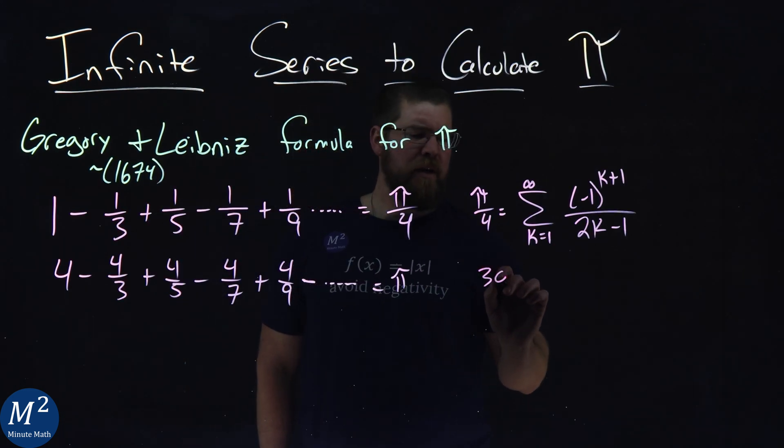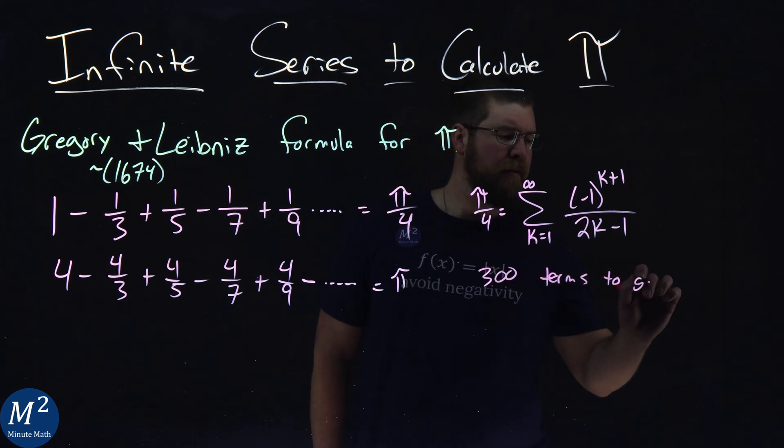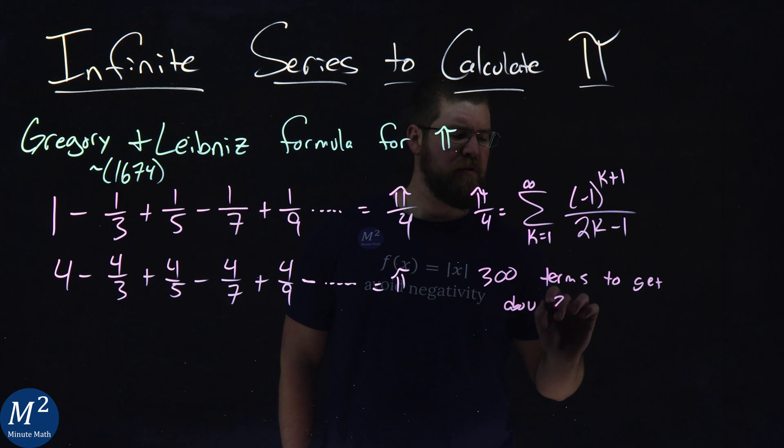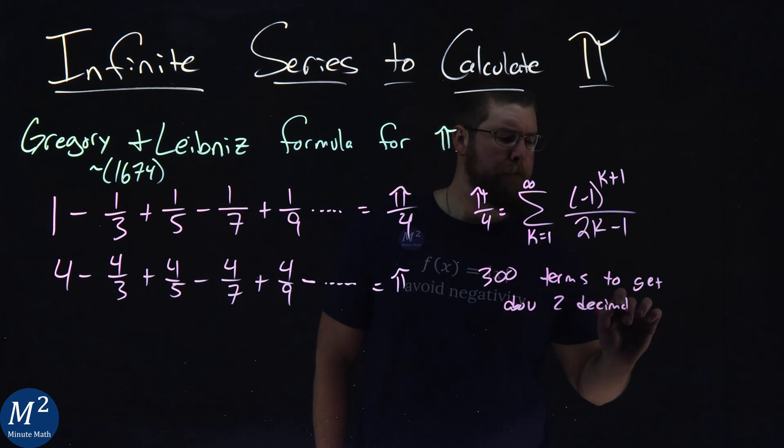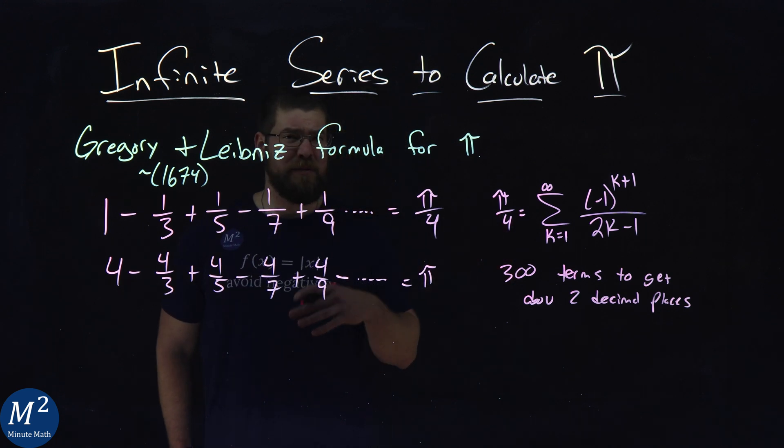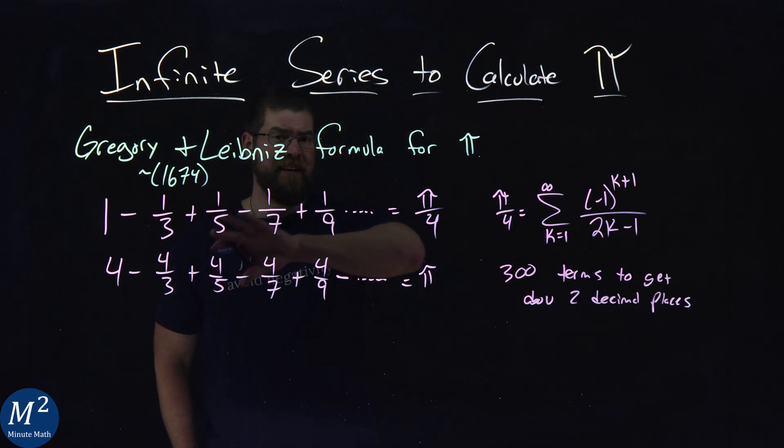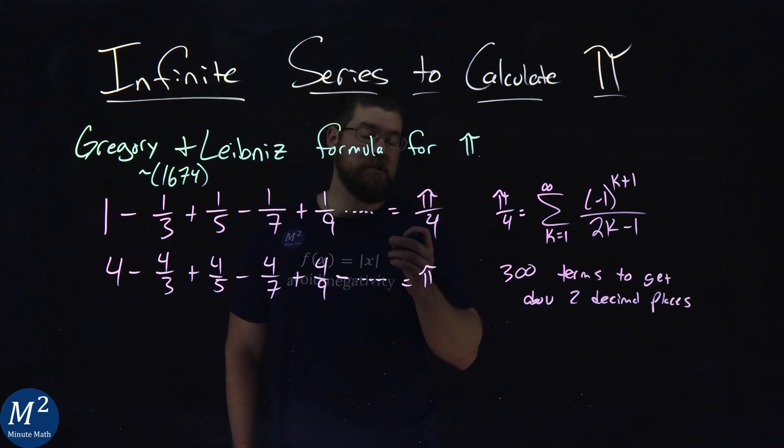And that's because we need about 300 terms here to get about two decimal places of accuracy. 300 terms, which is a lot. And there's actually many series that converge to pi much, much quicker. You can look those up, and maybe we'll have videos about that in the future.